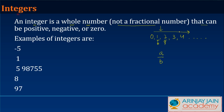An integer can be positive, which is what we have seen. It could also be negative — just like you have one, you can have minus one, minus two, minus three, minus four, and it goes on like that. Or it could be zero, which is what we have over here.